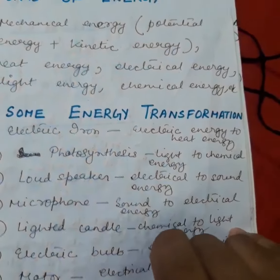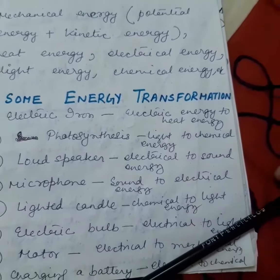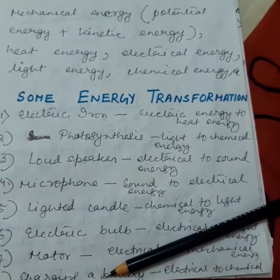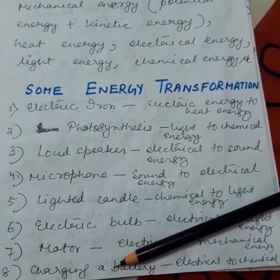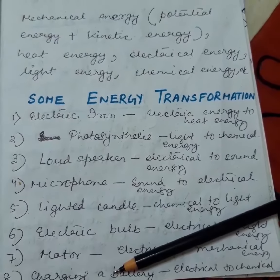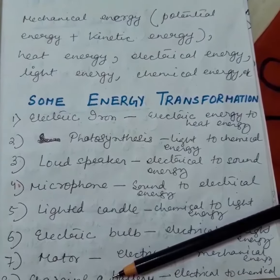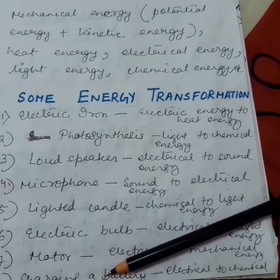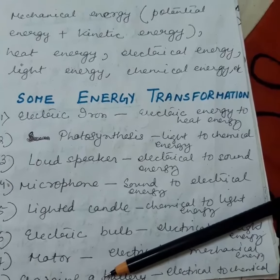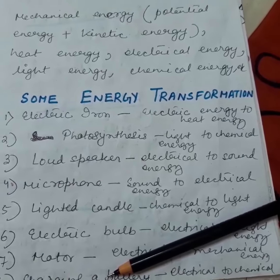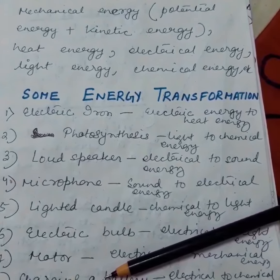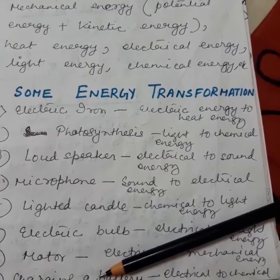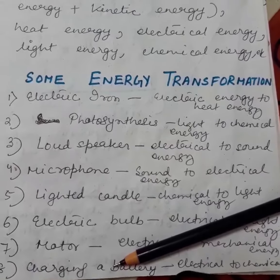Next we have energy transformation. These things are not given in your book, but you have to know them. Energy cannot be created — it can neither be created nor destroyed — but it can be converted from one form to another. We can convert light energy to heat energy, electrical energy to sound energy. There are many instances in everyday life and we can give many examples to show that energy can be transformed from one form to another.